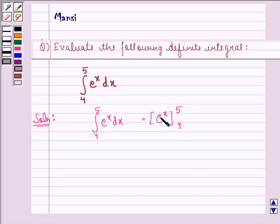So now first of all we put x equal to 5. We have e raised to power 5 minus then we put x to be equal to 4.